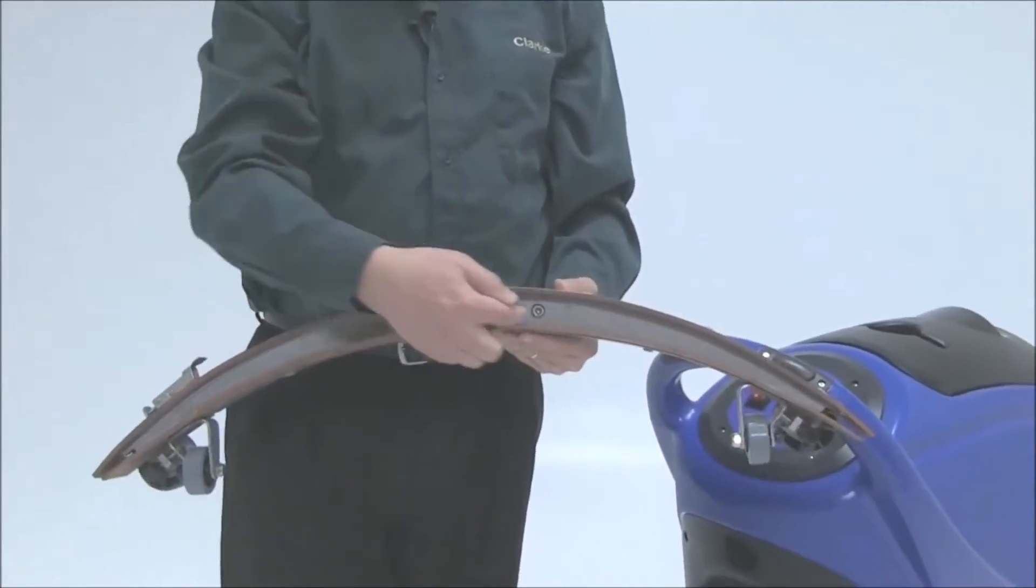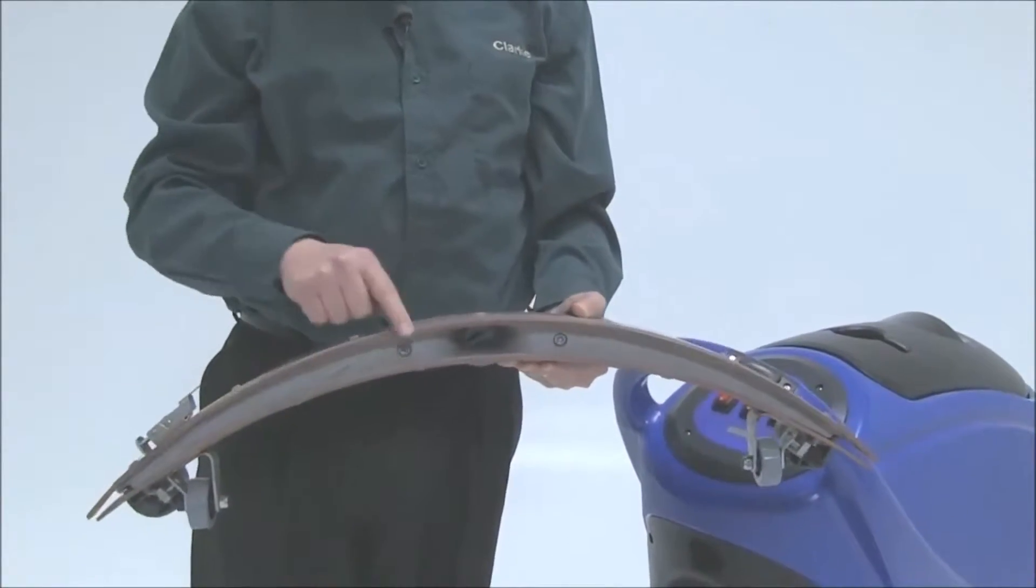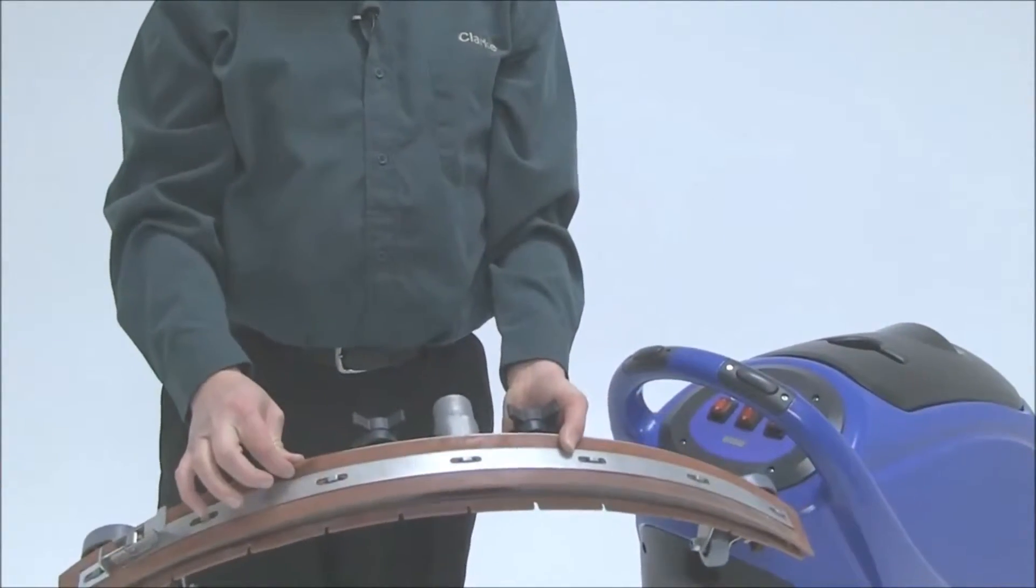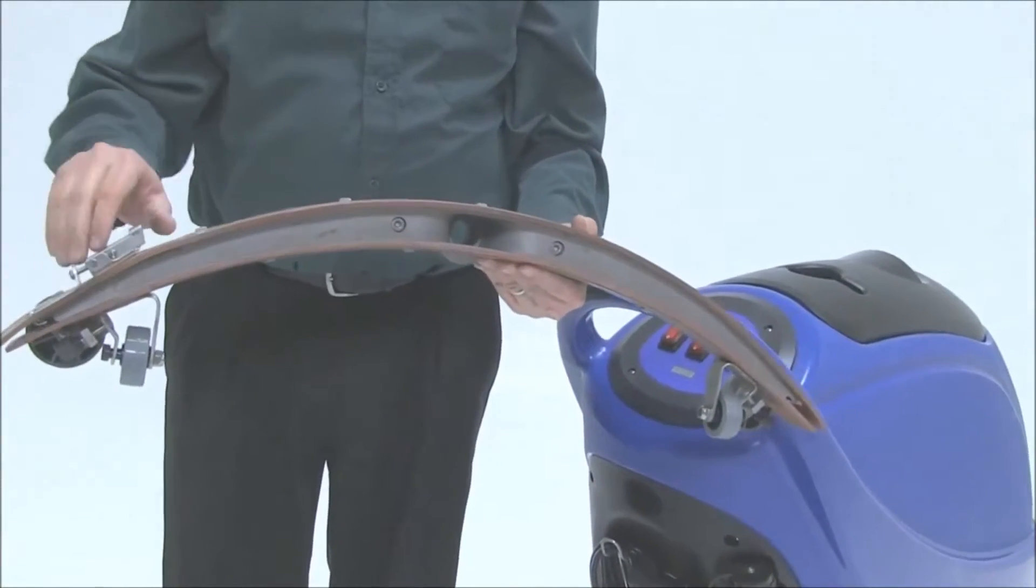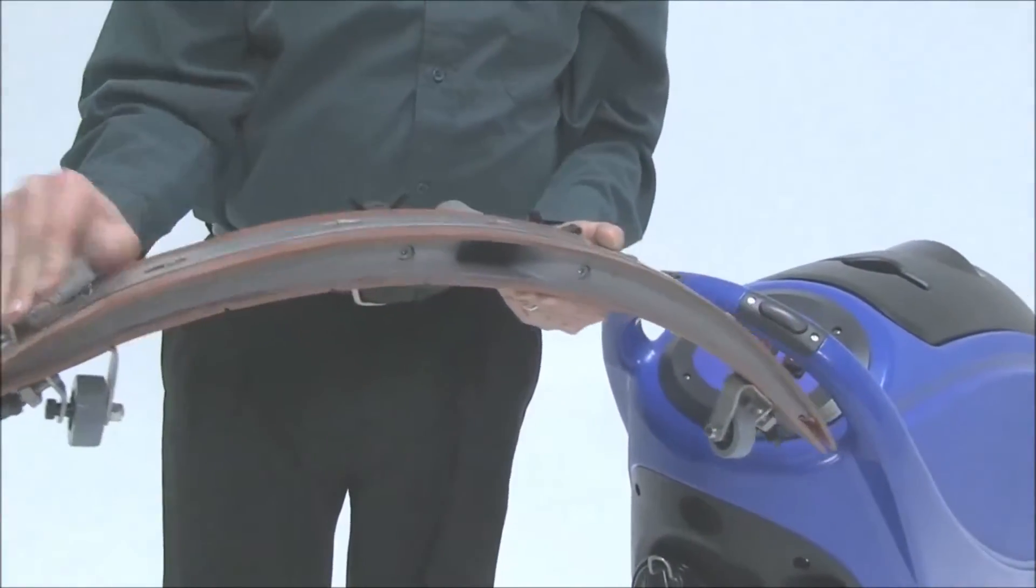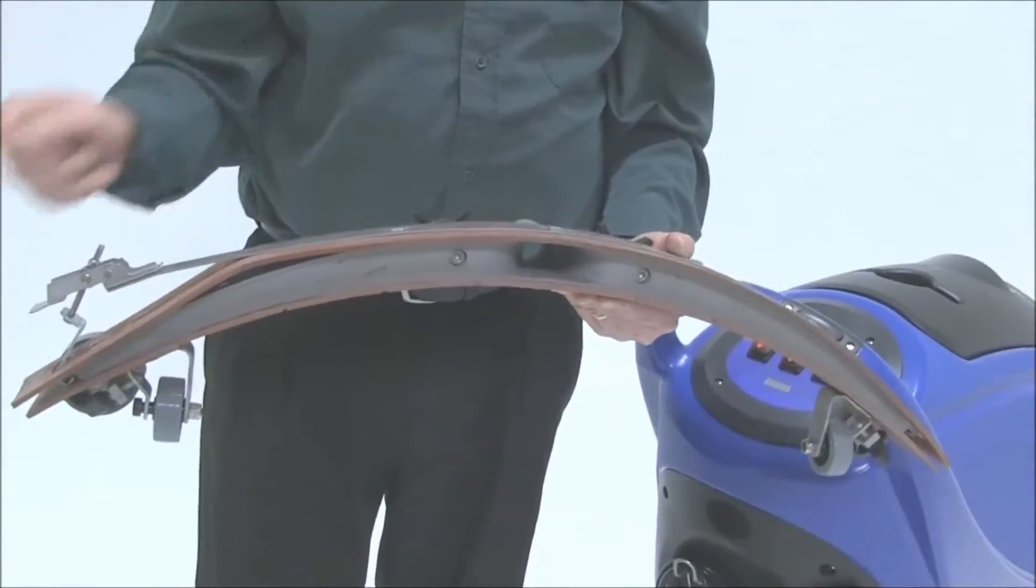The squeegee blades are four-sided, so you can use one, two, then you have two more edges on top. The squeegee assembly can be replaced with no tools by simply unlatching the clip and removing the blades.